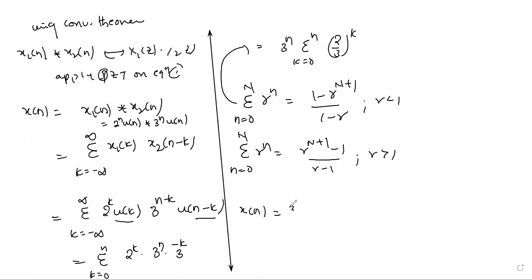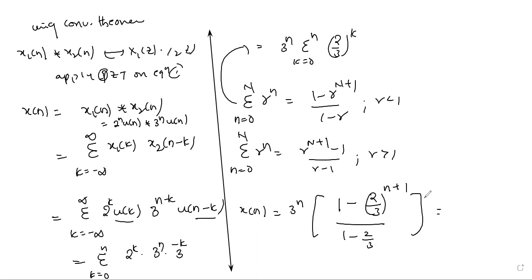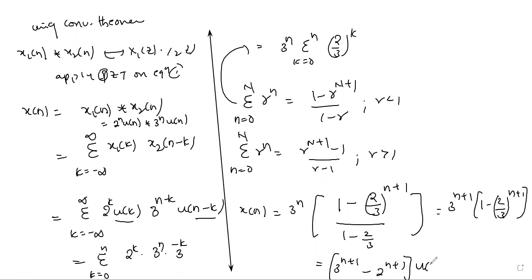Applying this: X of n equals 3 to the power N times the quantity 1 minus the fraction 2 over 3 raised to N plus 1, all divided by 1 minus R — since R equals 2 over 3 is less than 1. Bringing the 3 from the denominator into the numerator gives 3 to the power N plus 1 times 1 minus the quantity 2 over 3 to the N plus 1. Expanding: 3 to the power N plus 1 minus 2 to the power N plus 1. Multiplied by u of N to indicate a causal sequence. This simplifies to 3 to the power N plus 1 minus 2 to the power N plus 1, times u of N.